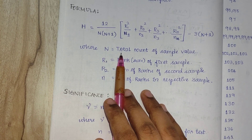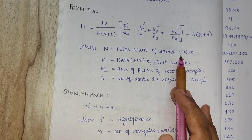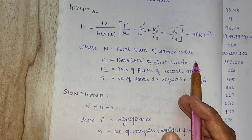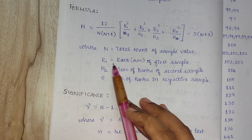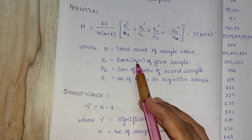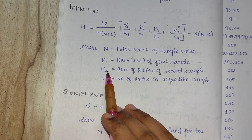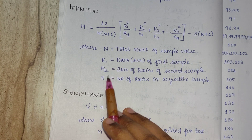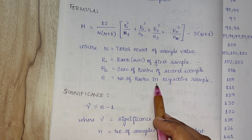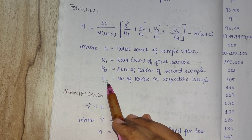Here, capital N is the total count of all sample values combined across all samples provided. R1 is the sum of ranks of all components within the first sample, and similarly R2 is for the second sample. Small n is the number of ranks in the respective samples — that is, the number of values in each individual sample.